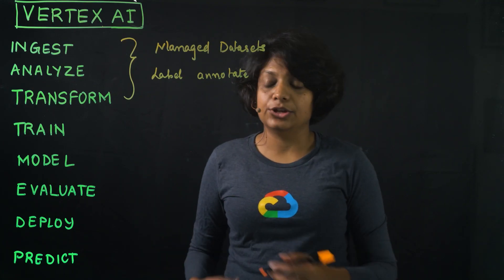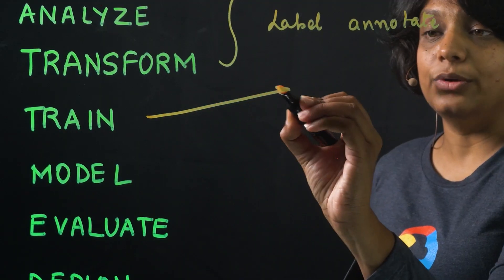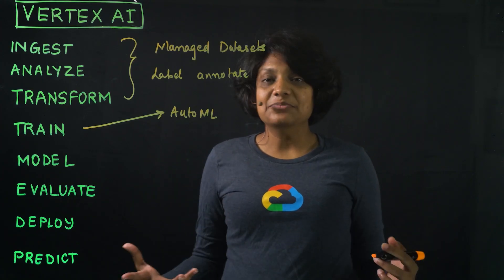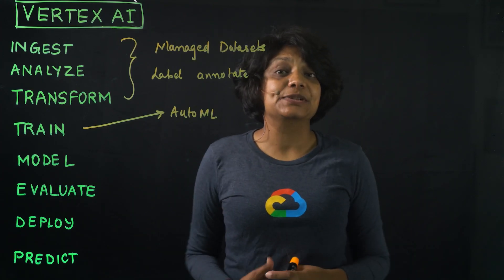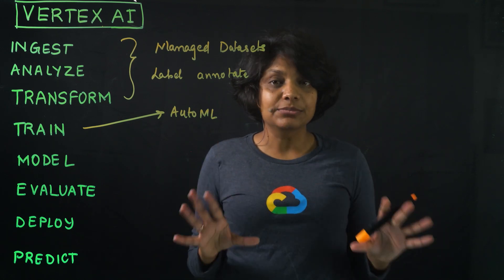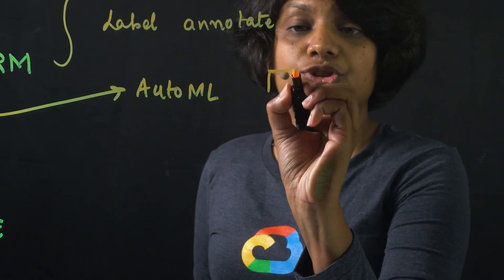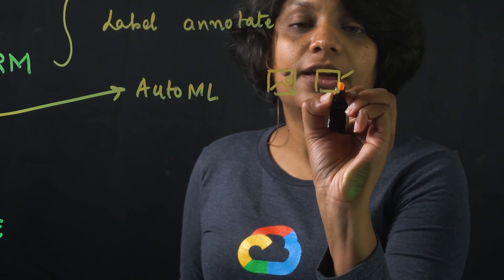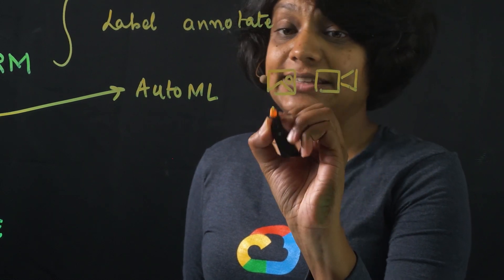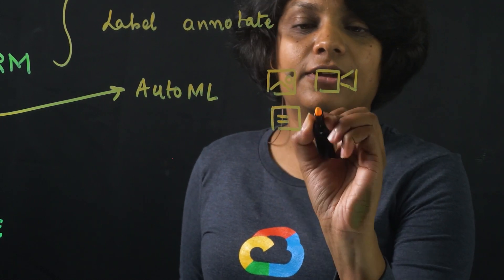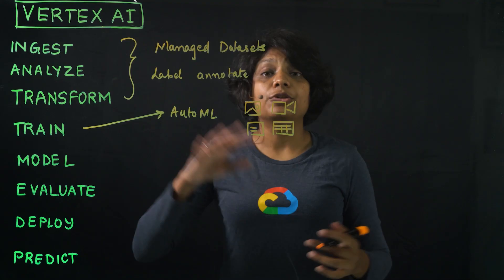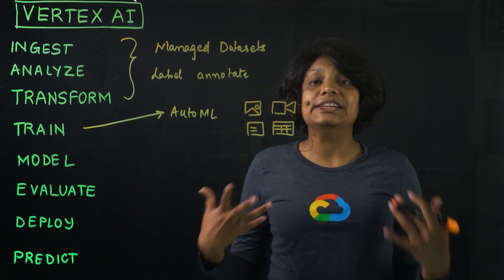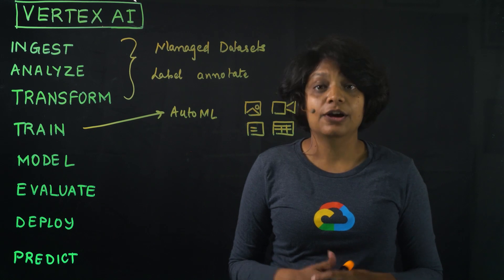You can also label and annotate the data right from within the console. For model training, you have two options: AutoML or Custom. With varying machine learning expertise on the team, for some use cases such as images or videos, text files, and tabular data, AutoML works great. With AutoML, you don't need to write any of the model code.